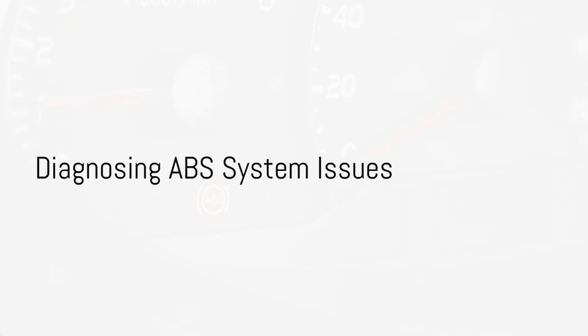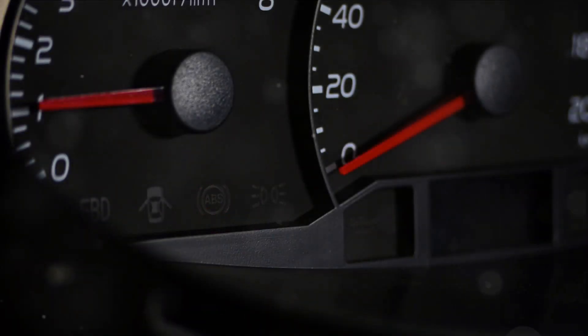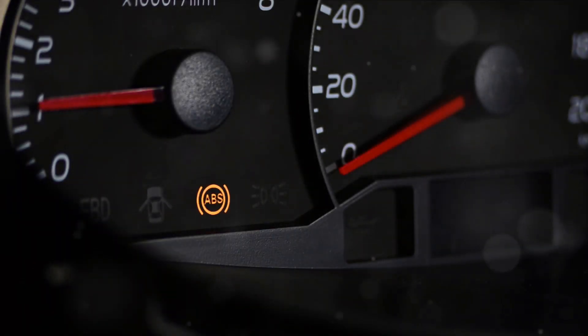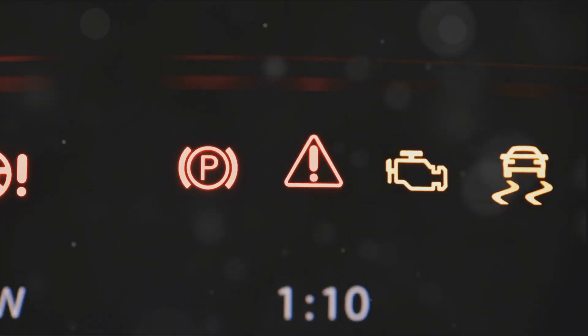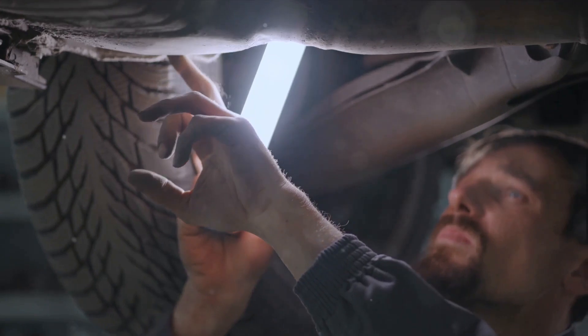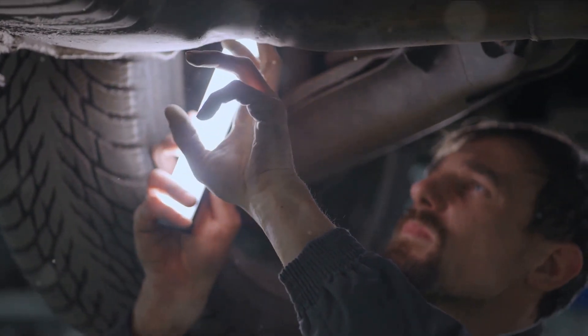Identifying the issue is the first step in fixing ABS system problems. Start by checking your dashboard for any ABS warning lights — a clear sign of trouble. Next, utilize a scanner tool to read any error codes; this could point you to the root of the problem. Don't forget to inspect your ABS sensors for any visible damage or dirt — they're crucial to the system's function.